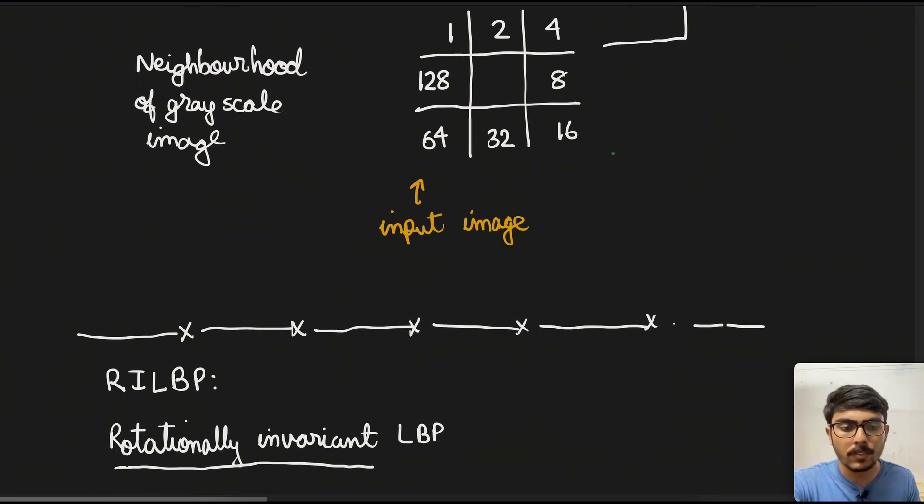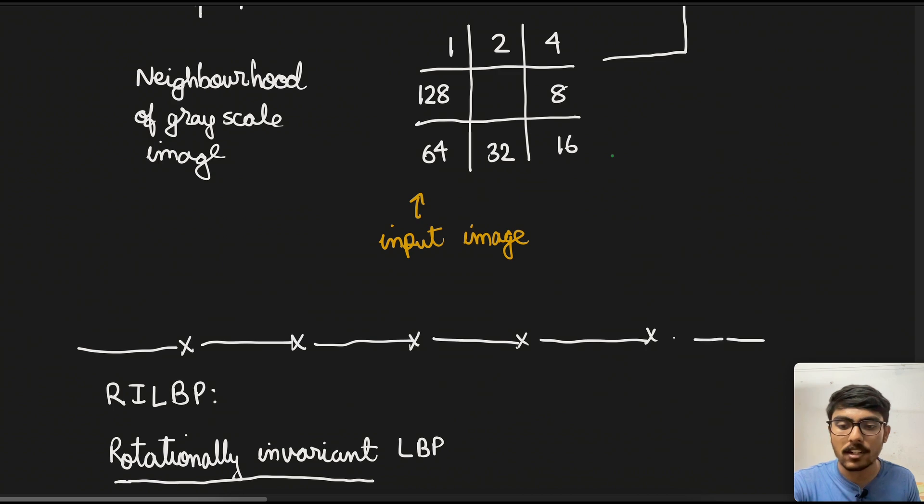Once we are sorted with this, we will move to the next part, which is RILBP. RILBP stands for rotationally invariant LBP. What do you mean by rotationally invariant? When we are analyzing textures in an image, their rotation plays an important role. If the same image is rotated by say 45 degrees, then the analysis can change. We need to have such operator or descriptor that is staying invariant, not getting affected by the rotation angle of the image.